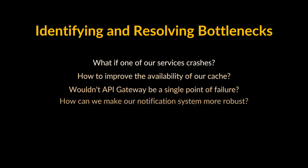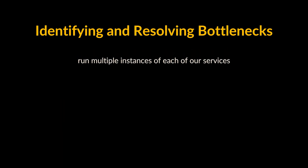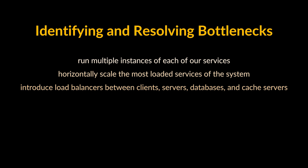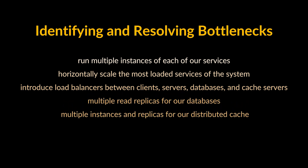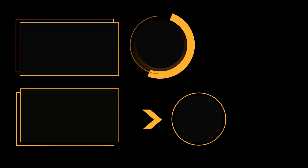Let's identify bottlenecks and attempt to resolve them. Key questions to ask: what if a service crashes? How do we improve cache availability? Could the API gateway be a single point of failure? How do we make the notification system more robust? How can we reduce media storage costs? To make the system more resilient, we can run multiple instances of each service and horizontally scale the most loaded ones, introduce load balancers between clients, servers, databases, and cache servers, use multiple read replicas for databases, multiple instances for our distributed cache, and maintain a standby replica of the API gateway. You don't have to dive into all details during an interview — quickly highlighting these ideas is enough.